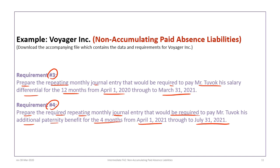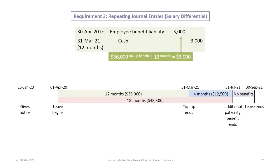Let's proceed with requirement three: the repeating entries every month to record the salary differential. We presume journal entries are made at the end of the month, so even though the leave begins April 1st, we record on April 30th. Every month from April 30th, 2020 to March 31st, 2021, the company records a debit to employee benefit liability for $3,000 — that is the $36,000 top-up divided by 12 months — and credits cash to pay that out, repeated every month for 12 months.